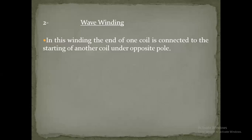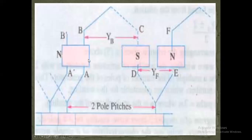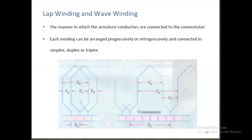Wave winding: in this winding, the end of one coil is connected to the starting of another coil under the opposite pole. The coil starts from the south pole and ends at the north pole, spanning two pole pitches. The difference between lap winding and wave winding lies in the manner in which the conductors are connected to the commutator. Each winding can be arranged progressively or retrogressively, and connected in simplex, duplex, or triplex mode.